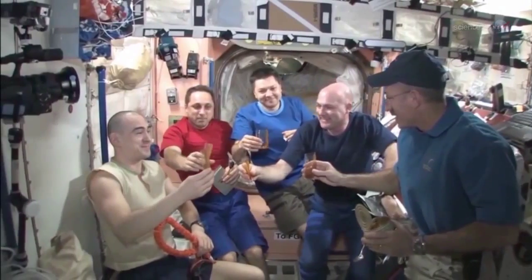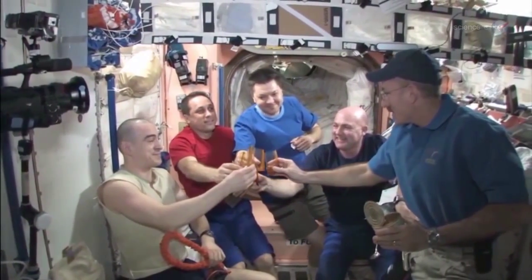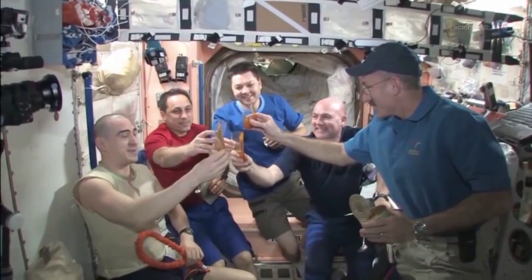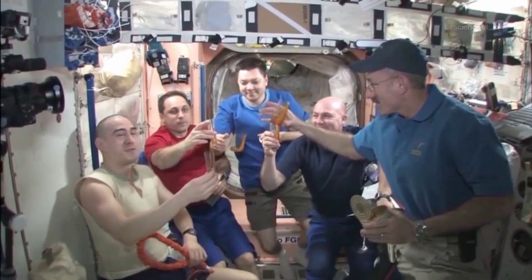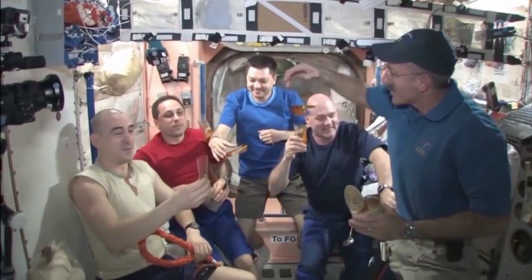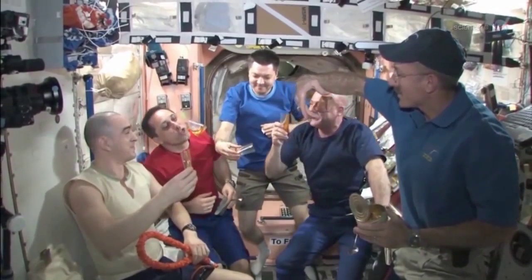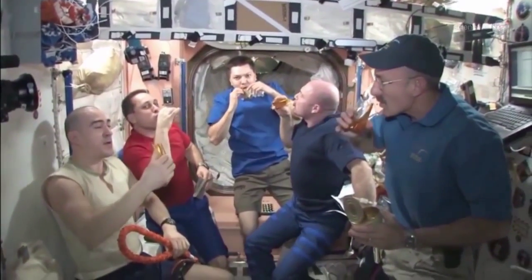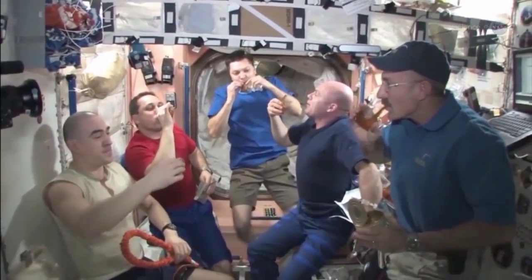This may well be what future space colonists use when they want to have a celebration. Indeed, the patent application specifically mentions toasting as one of the uses of the device. It's easy to imagine what they might be toasting: toilets and air conditioners and fuel tanks and recycling systems, all working better thanks to capillary flow experiments on the space station.